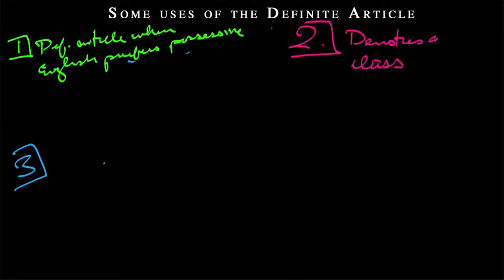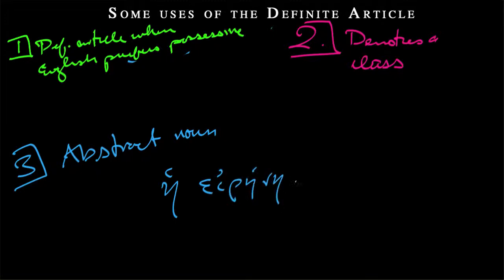Third case will be different ways of talking about a normally kind of abstract noun. And we have dikaiosune, but let's do something better. Let's use that word for peace again. So, he erene, the peace. And then this is skipping ahead a little bit, but that's fine. Agathe, and then esti, peace is good.